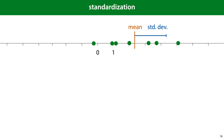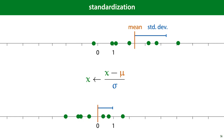Another option is standardization, which follows much the same process. We look at the mean and the standard deviation of the data and apply a linear transformation that results in a mean of 0 and a standard deviation of 1. The transformation is: subtract the mean and then divide by the standard deviation.